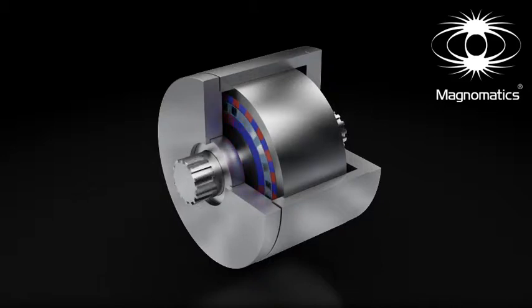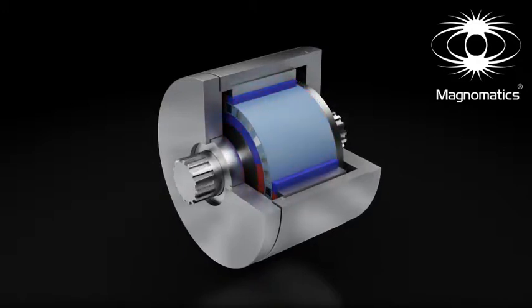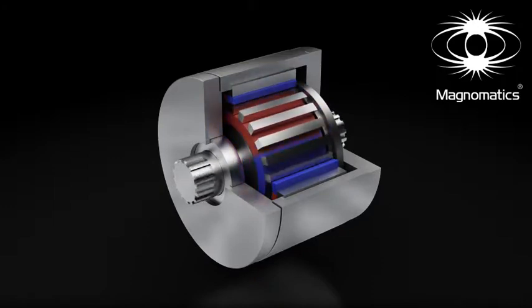The gear consists of only three rings. Two of these have powerful magnets arranged in an alternating north-south pattern. The middle ring consists of steel segments which alter the magnetic field between the inner and outer magnet rings.